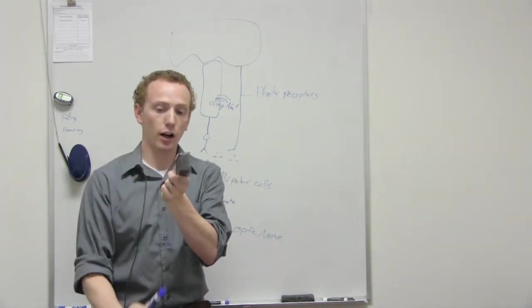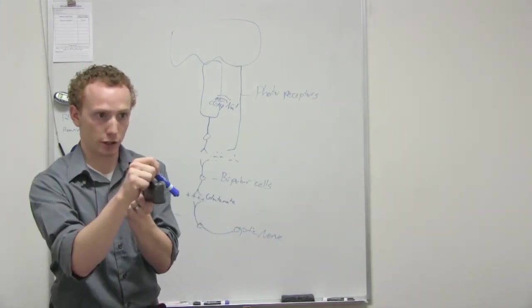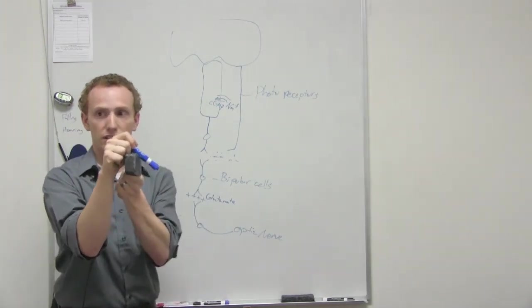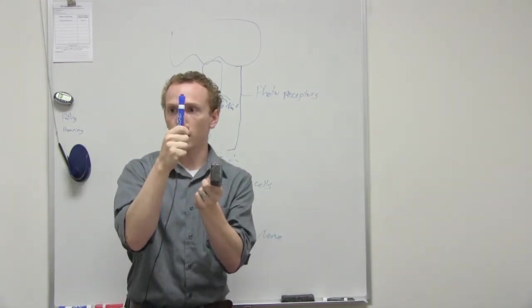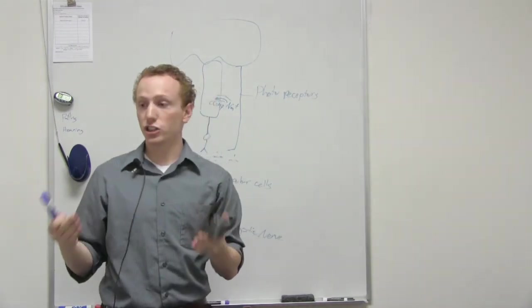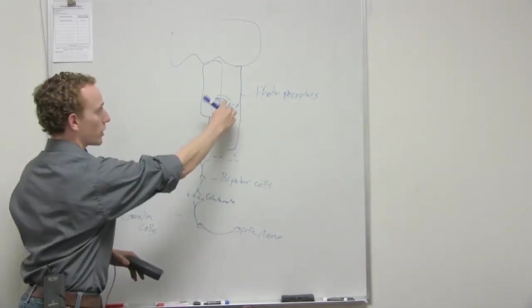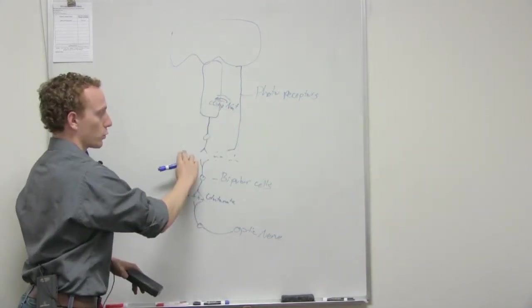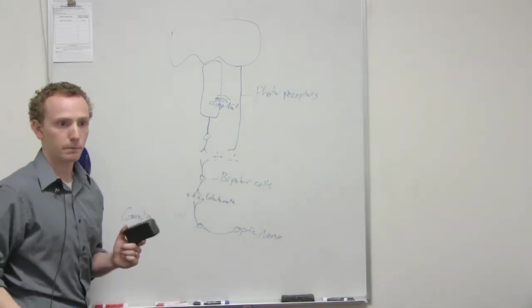On, cyclic GMP on. Off, cyclic GMP off. Because when it's on, you're in the dark. So this is in the dark. So as soon as the light turns on, that's when it falls off. Light turns on, it changes the bond. Light UV rays change it, falls off. Cyclic GMP turns off, closing the sodium channel, making it so we don't release glutamate. Bipolar cell jumps up, runs.